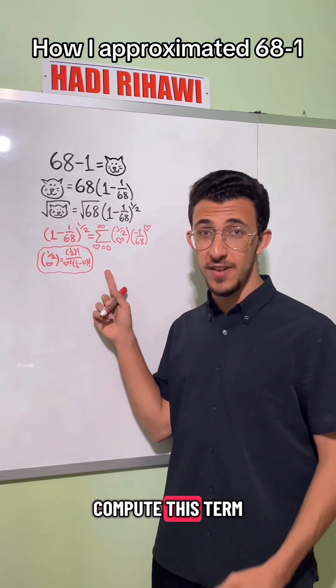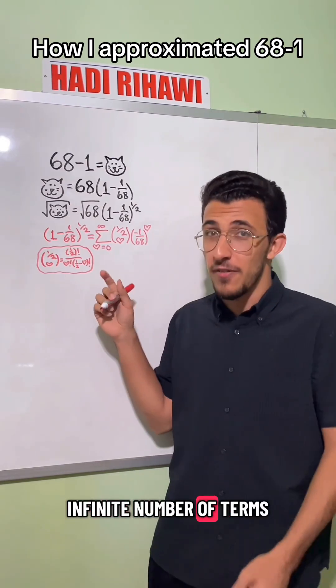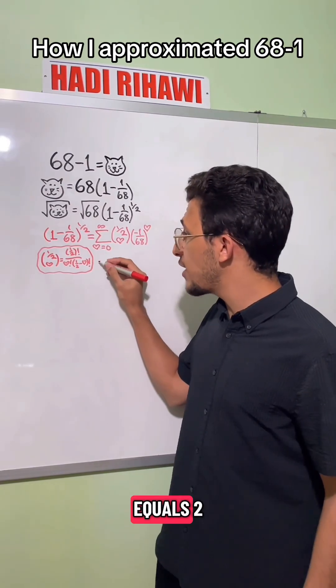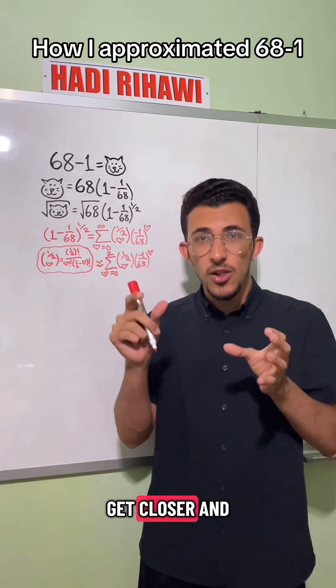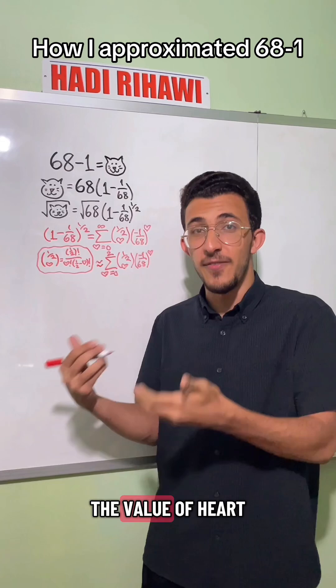I can't explicitly compute this term by term because there's an infinite number of terms, so I truncate it at heart equals 2. This gives us a pretty good approximation for this value, since the terms get closer and closer to 0 as you go further up in the value of heart.